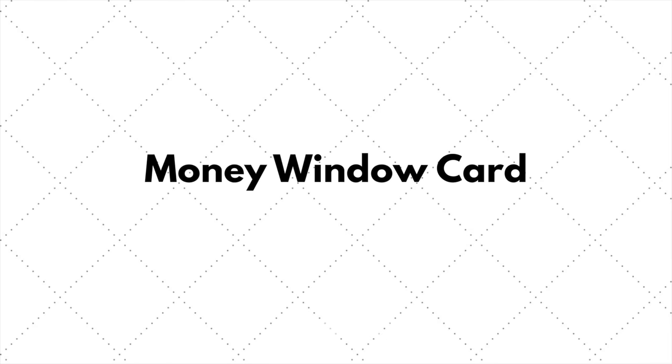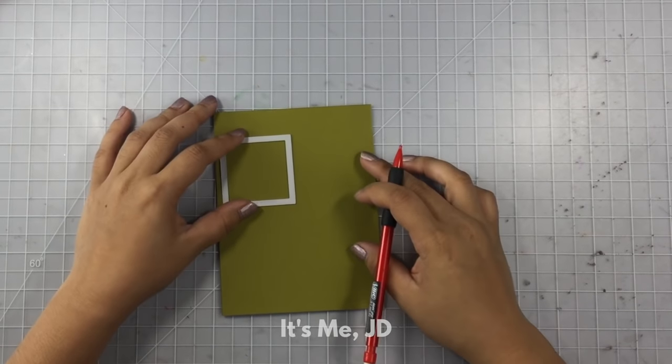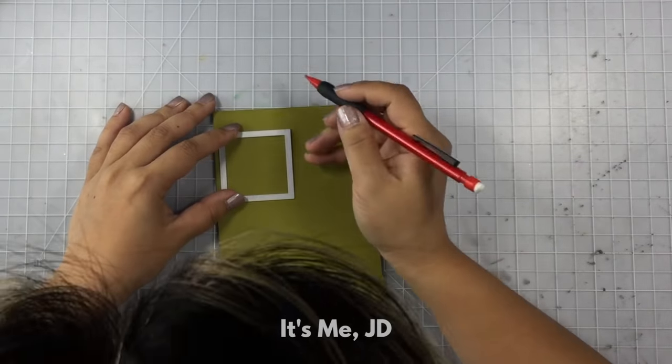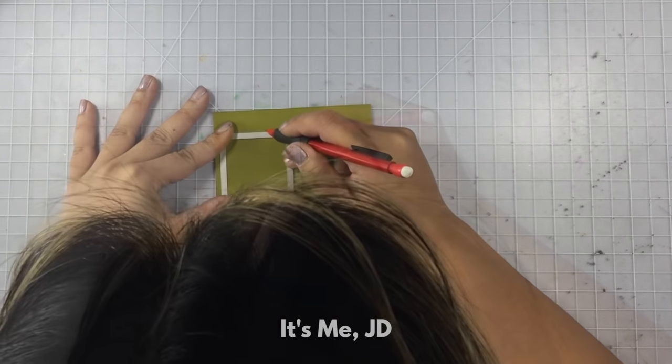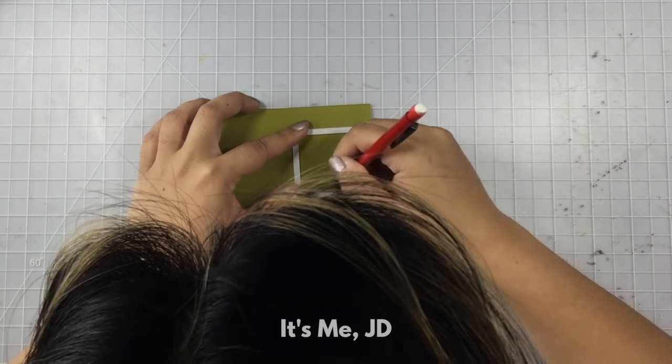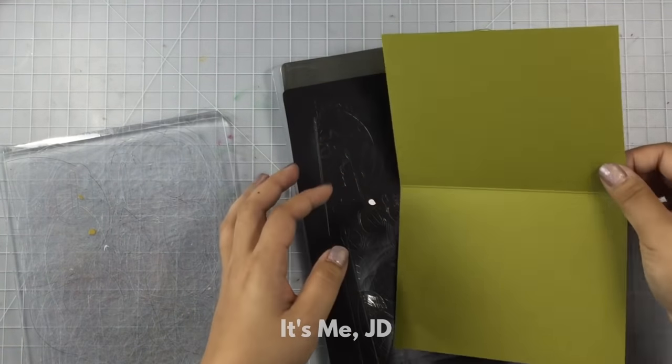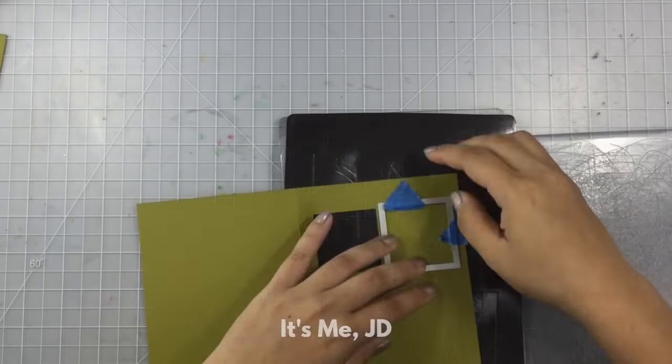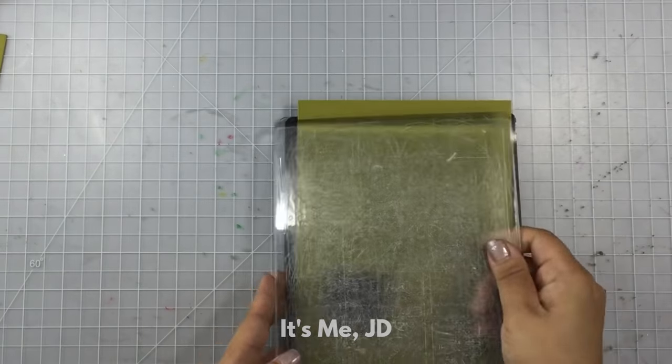For this next card, I wanted to make a handmade card that would show the money, like tease the money, like show me the money. But I didn't want the recipient to have to tear anything in order to retrieve the money because card makers have feelings too. So, using my square metal die, I'm tracing out where I want my little windows to be and then I'm going to place my die on top of my note card and run it through my die cutting machine.